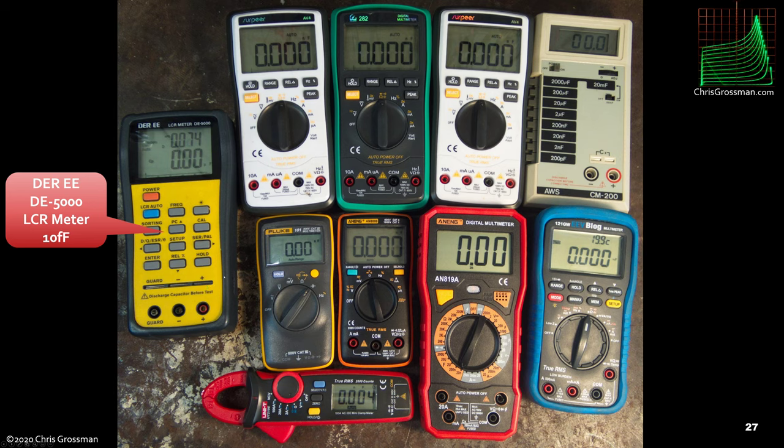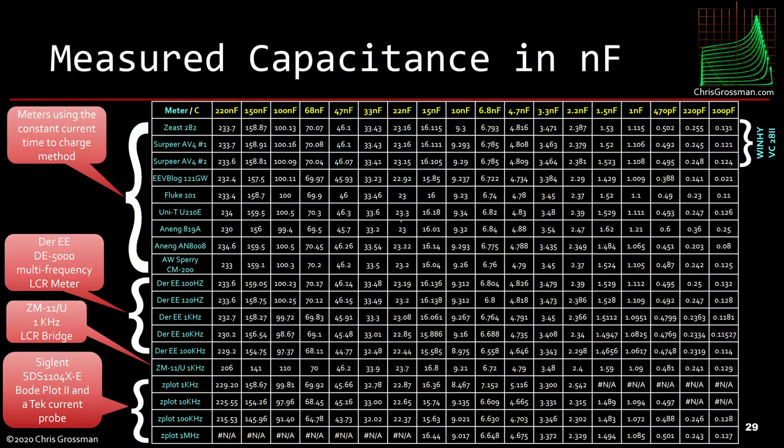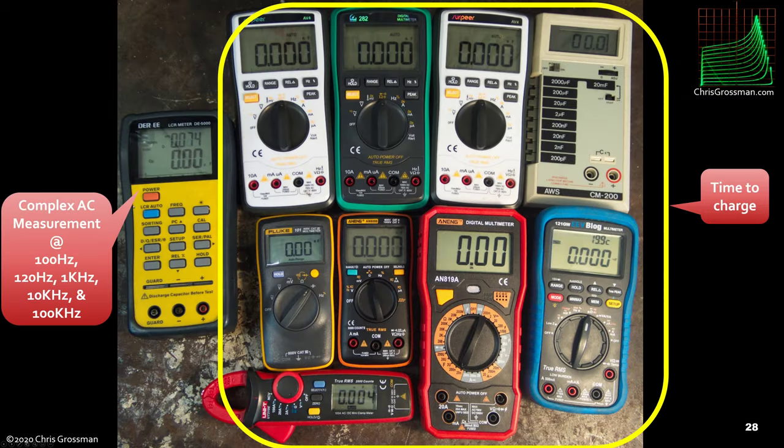Now all these meters over here in this yellow outline are time-to-charge measurements. They work by putting a fixed current on the capacitor and then measuring how quickly the capacitor charges to a voltage or changes between two voltages, and by timing that they get a capacitance measurement. The Duree meter actually does complex AC measurements at all these different frequencies, and from the complex AC measurements it measures the real and imaginary parts of the current and voltage and computes the real and imaginary parts of impedance and then the component values from that. It's a very handy lab instrument to have and I'm happy I bought it. It's just ungodly slow if you use leads.